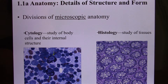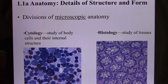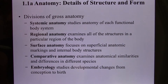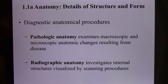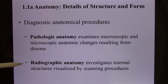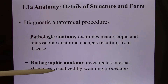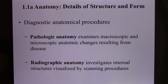Histology is the study of tissues. Tissues are a lot of cells together, and all your body cells can be divided into four different kinds of tissues. We'll talk about that later. Anatomy also includes pathological anatomy, the study of disease, and radiographic anatomy, which studies structure using scanning procedures like fMRI and PET scan.